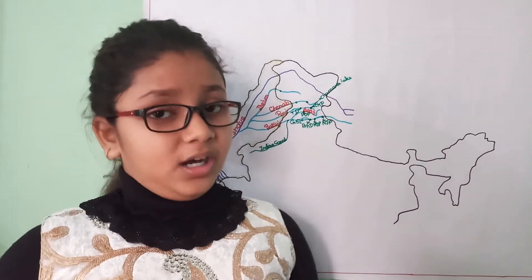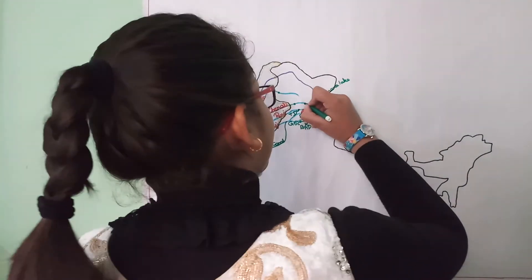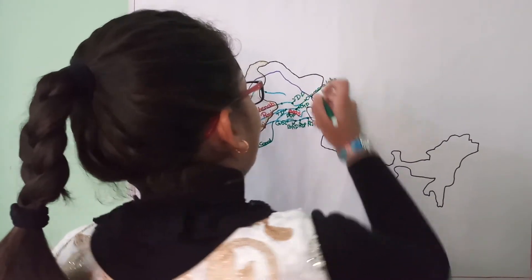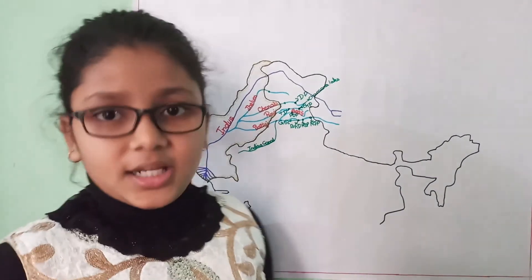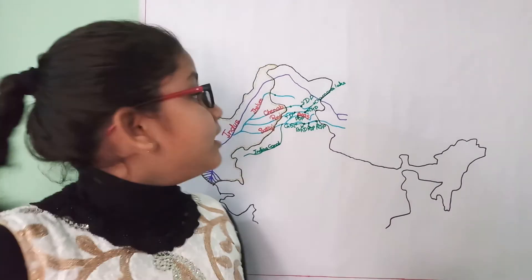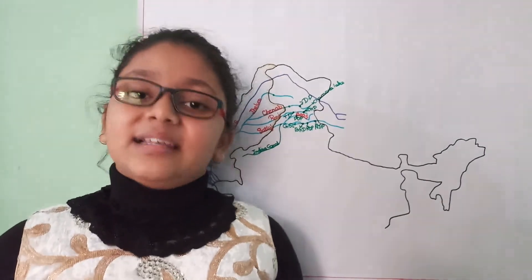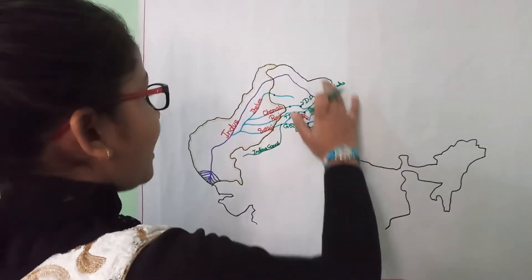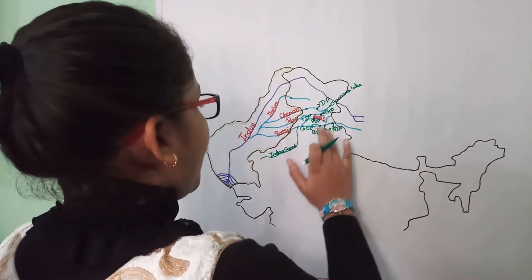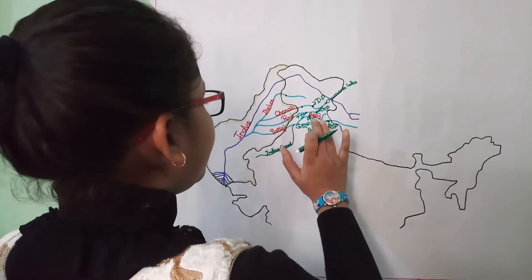So now comes the Chenab River. On the Chenab River, first we have the Dulhasti Hydropower Project. It is built recently on the Chenab River in Jammu and Kashmir, here. Dulhasti Hydropower Project. Its total capacity is 390 MW, and it facilitates the states of Jammu and Kashmir, Punjab, Rajasthan, Haryana, Chandigarh, Delhi, Uttarakhand, and UP.